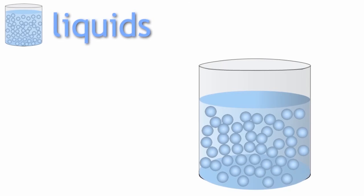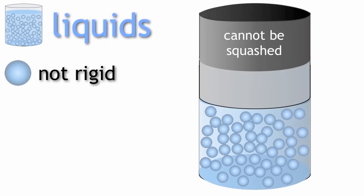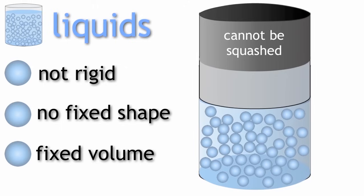So, liquids are not rigid, but because their particles are closely packed as in solids, they cannot be squashed or compressed. They do not have a fixed shape, but they do have a fixed volume.